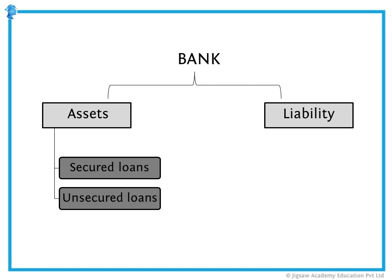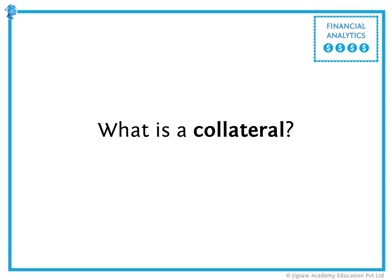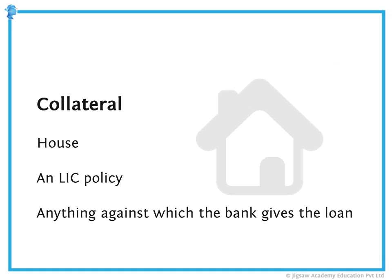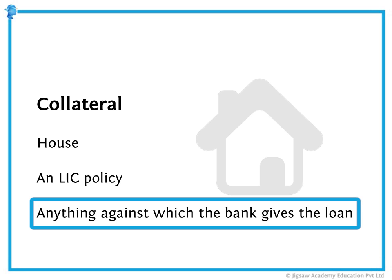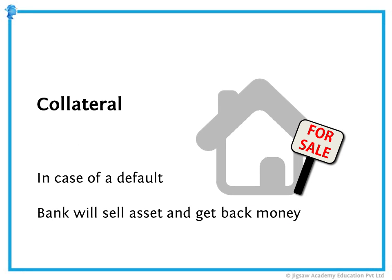Secured loans and unsecured loans are the two types of assets that banks have. Secured loans are backed with some kind of collateral. Collateral is a house, an LIC policy, or anything against which the bank gives the loan. In case of a default — i.e., if we do not pay the loan back to the bank — the bank will sell this asset and get back its money.